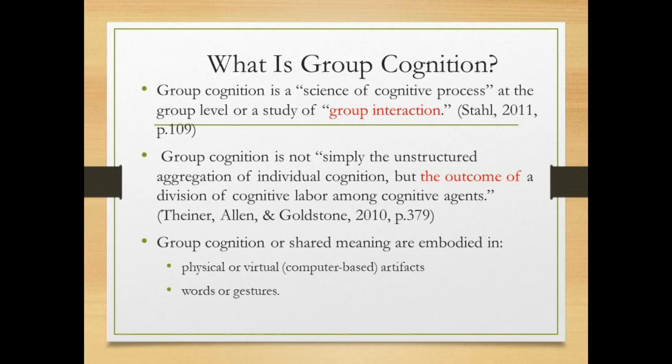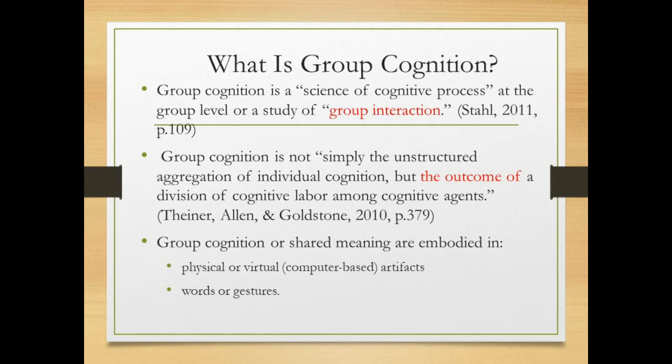So what is group cognition? The idea of group cognition basically comes from studies of computer-supported collaborative learning, what we call CSCL studies. According to Dr. Gary Scales, group cognition is defined as a study of group interaction. Similarly, some cognitive psychologists also define cognition as the outcome of group interaction instead of a simple aggregation of individual cognition.